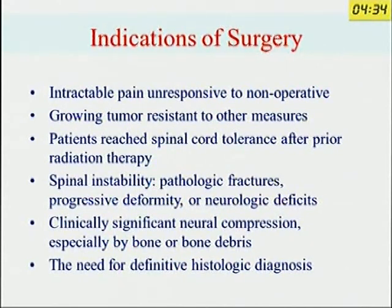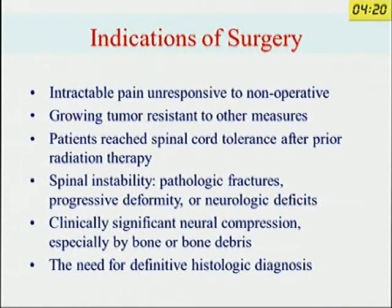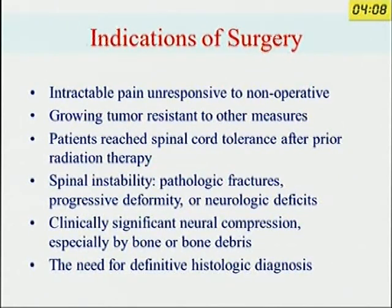Patients with spinal cord tolerance — meaning after prior radiation therapy you still start getting deficit — need surgery. Pathological fracture, progressive deformity or progressive neurological deficit are also indications. Clinically significant neuro-compression, especially by bone or bone debris from fracture or bone expansion, and the need for a definitive histological diagnosis are additional indications.